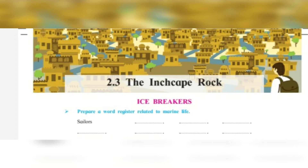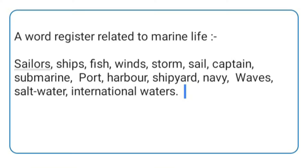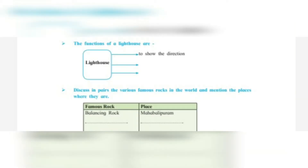First of all, let's deal with icebreakers. Activity number one: prepare a word register related to marine life. The answer includes: sailor, sea, fish, wind, storm, sail, captain, submarine, port, harbour, shipyard, navy, waves, salt water, international waters. These are the words for the register.